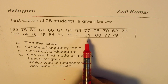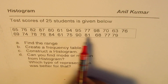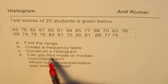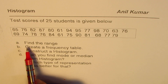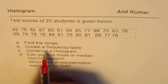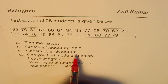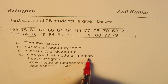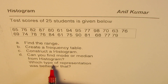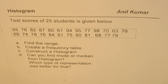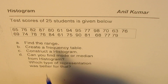These are called raw scores — they are not arranged in any way. Based on these marks you need to answer the following questions: find the range, create a frequency table, construct a histogram, and determine if you can find mode or median from the histogram. You can pause the video, answer the questions, and then look into my suggestions.